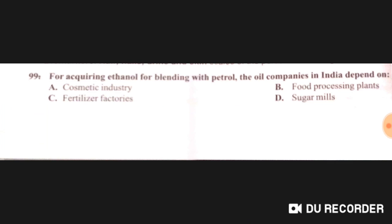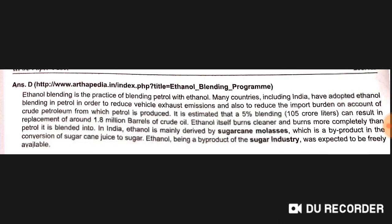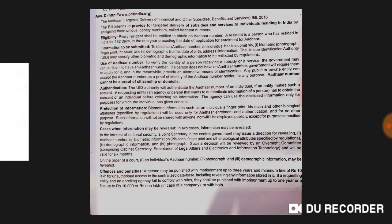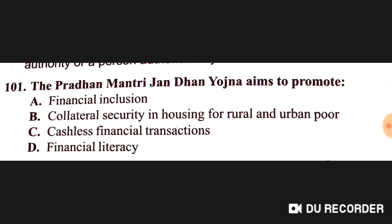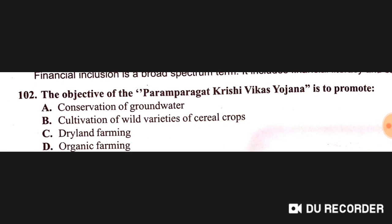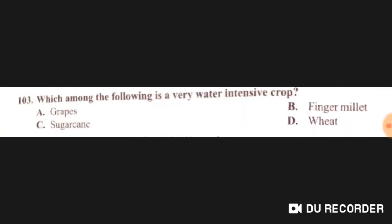For acquiring ethanol for blending with petrol, oil companies in India depend on sugar mills. The Targeted Delivery of Financial and Other Subsidies, Benefits and Services Act 2016 aims neither to strengthen PM Jan Dhan Yojana nor provide funds to farmers. PM Jan Dhan Yojana aims to promote financial inclusion. The objective of Paramparagat Krishi Vikas Yojana is to promote organic farming.